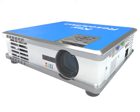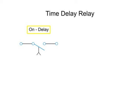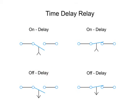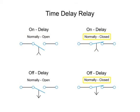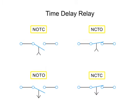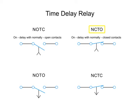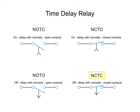Let's look at four basic types of relays. There are two types of relay functions: on delay and off delay, each with two types of contacts — normally open and normally closed — represented here by four symbols. NOTC functions as an on delay with normally open contacts. NCTO operates as an on delay with normally closed contacts. NOTO functions as an off delay with normally open contacts. And NCTC operates as an off delay with normally closed contacts.